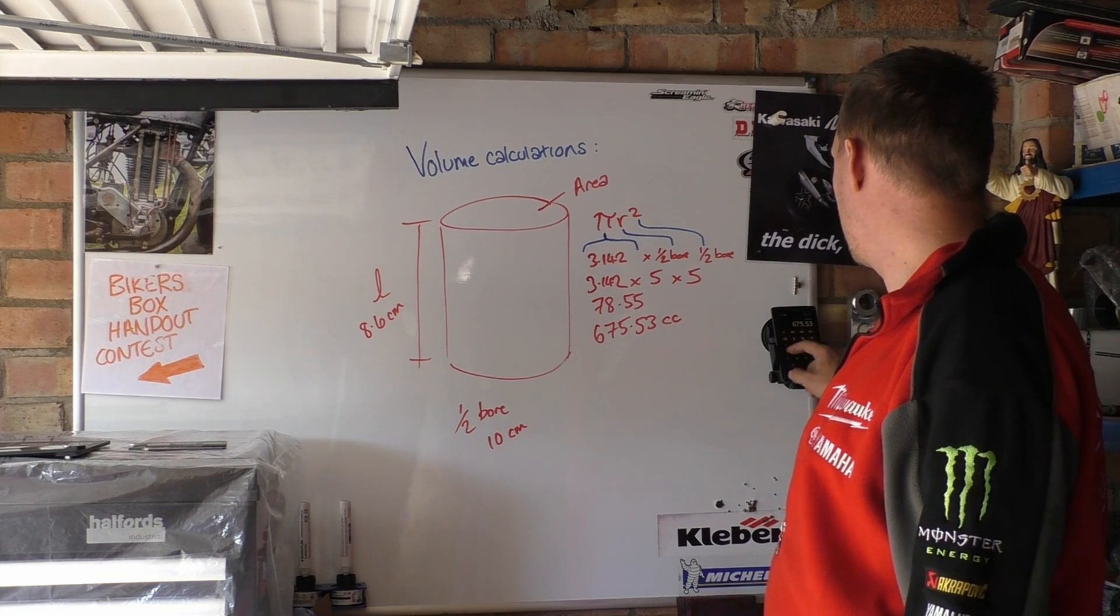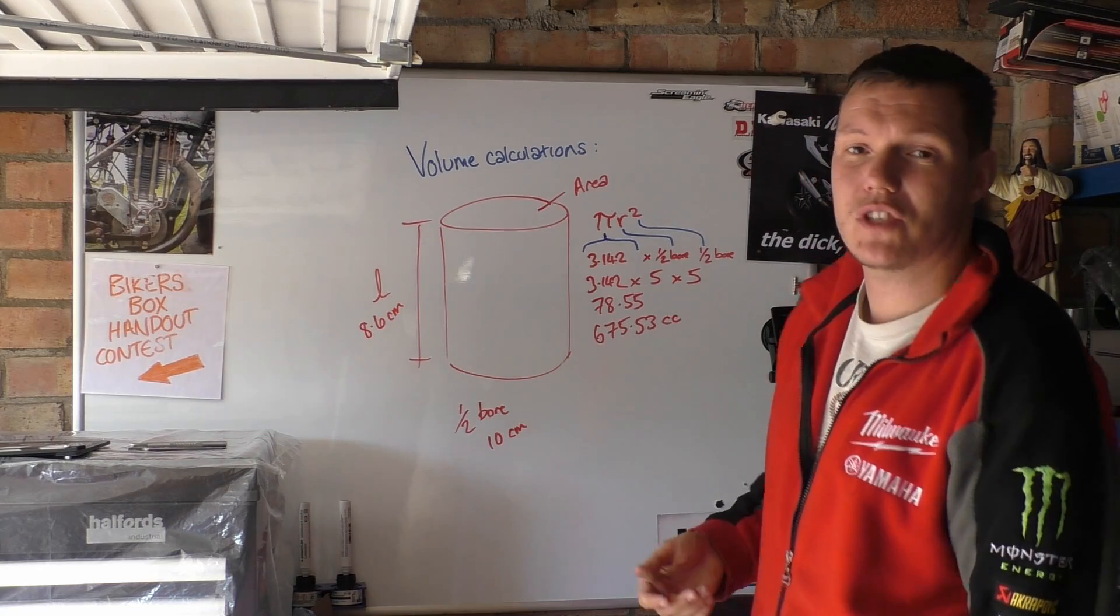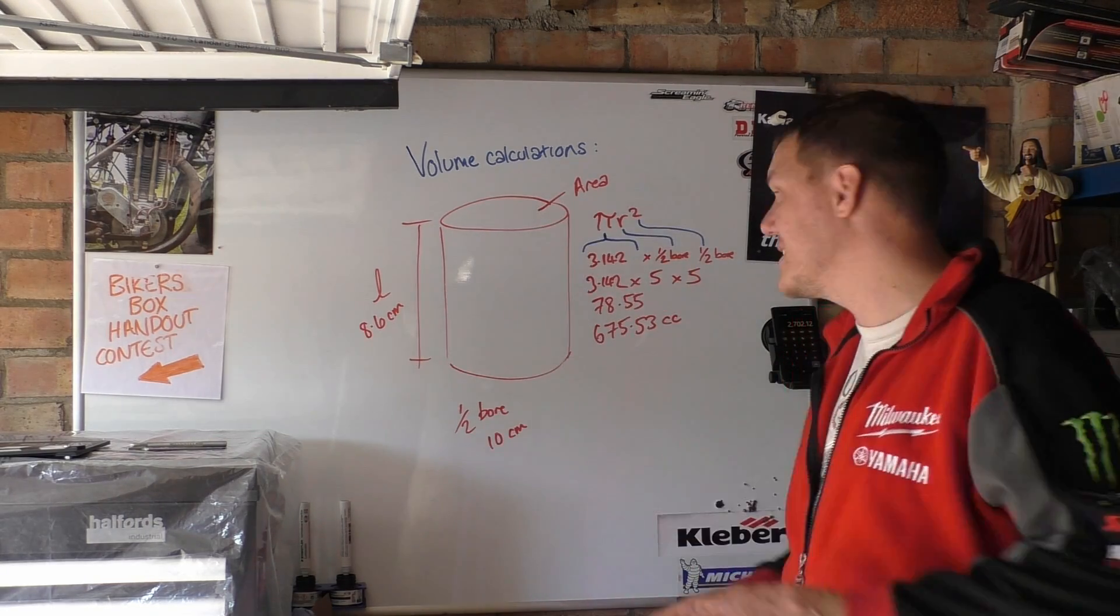And then if you just times this by 4, it's 2702. 2.7 liters or 2702 CC. But it's just your area times your length. It's as easy as that.